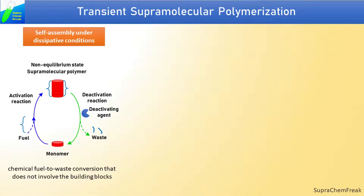First, self-assembly under dissipative conditions: a self-assembly process associated with chemical fuel-to-waste conversion that does not involve the building blocks. The reaction cycle involves an activation step where a fuel, such as ATP, is injected into the system that converts monomers to self-assembling monomers. In the presence of an external deactivating agent, which can be an enzyme, deactivating reactions occur where the fuel is consumed — i.e., chemical fuel-to-waste conversion — resulting in disassembly. For instance, ATP is hydrolyzed to ADP.